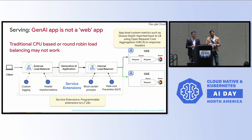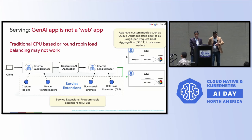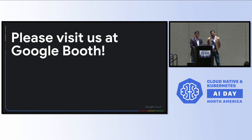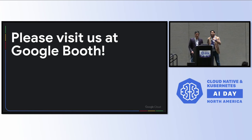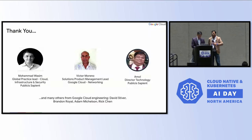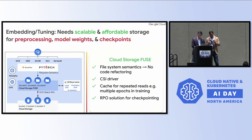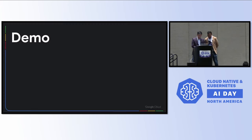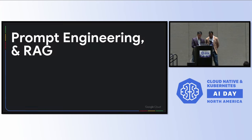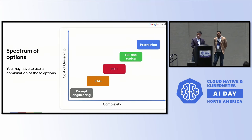I'll pause here and see if there are any questions. There's a question about the complexity slide — the spectrum from prompt engineering to fine tuning, the cost versus efficiency tradeoff. There's a third dimension of accuracy associated with that. Which of these options and how much do you need to push from an accuracy standpoint?